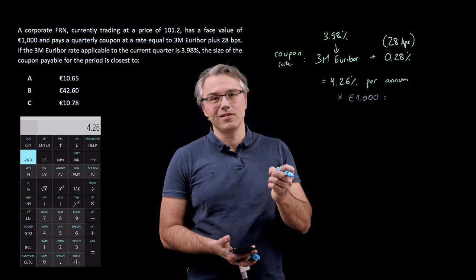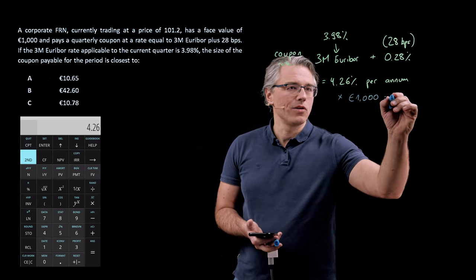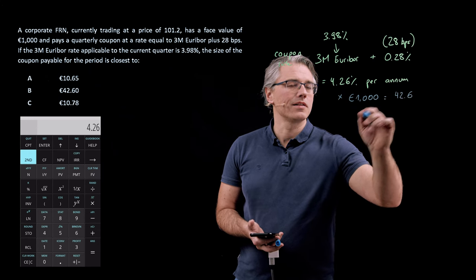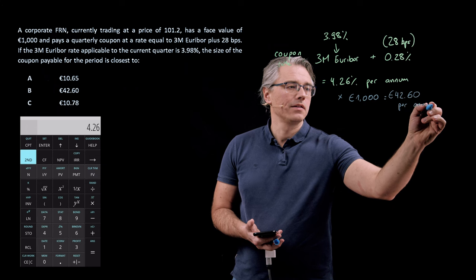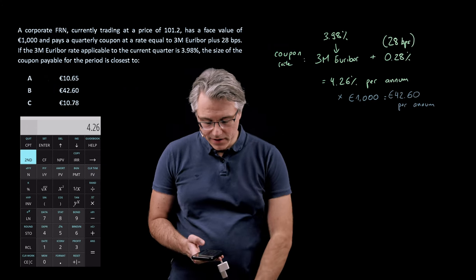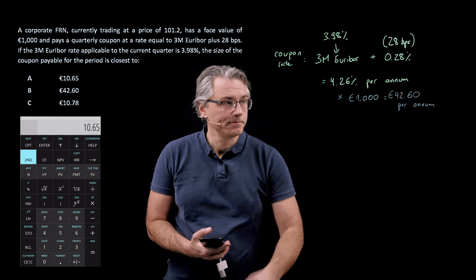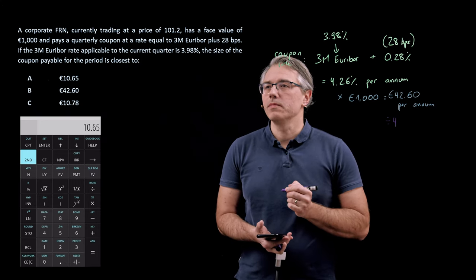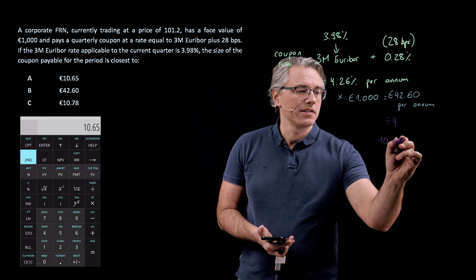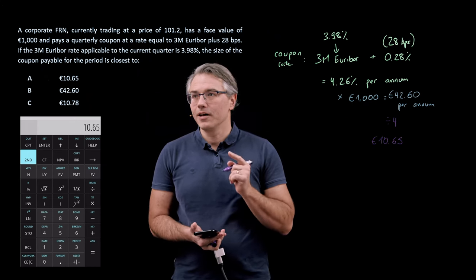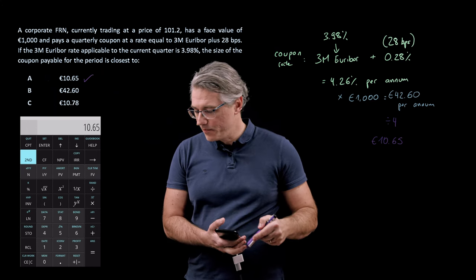So 4.26% times $1,000 gives $42.60 per annum. But we need to turn this into a quarterly figure, so we divide by 4, giving $10.65 for the current quarter. The answer is answer A. With FRNs, what you do every quarter is take an updated reading of the MRR — in this case three-month EURIBOR — plug it into the formula, and get a fresh current coupon.